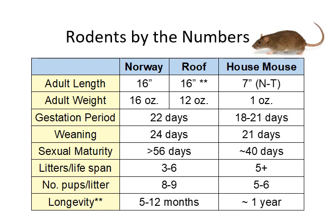Looking at some numbers: the Norway rat and roof rat are about the same length, but the Norway rat is much heavier — again the more robust of the two. The house mouse is about seven inches nose to tail and weighs much less than rats. Gestation periods and time to sexual maturity are relatively short — for mice, just about 40 days to sexual maturity, meaning infestations can build up quickly.